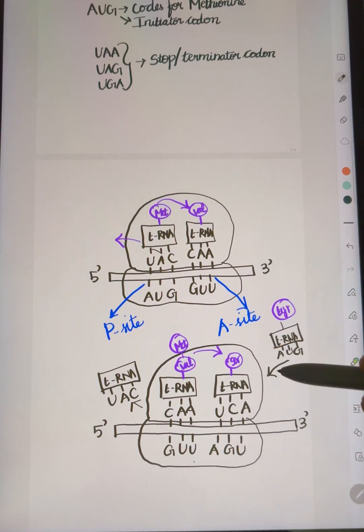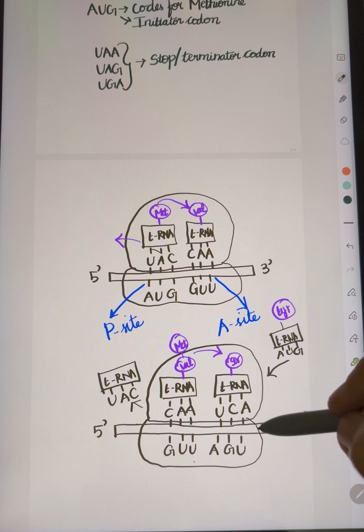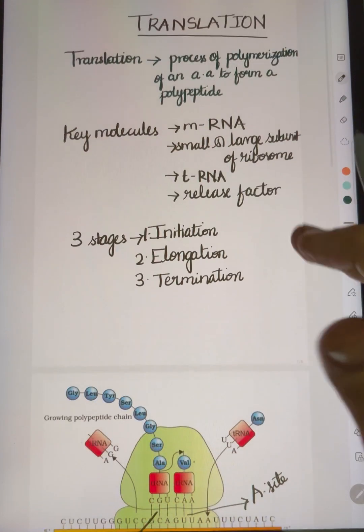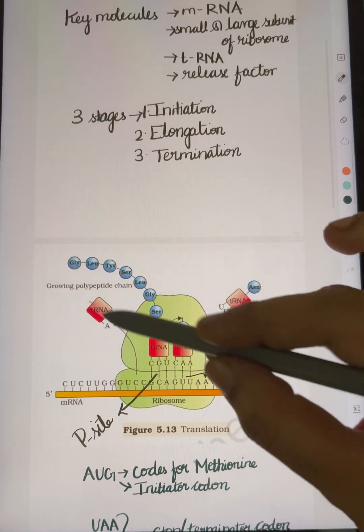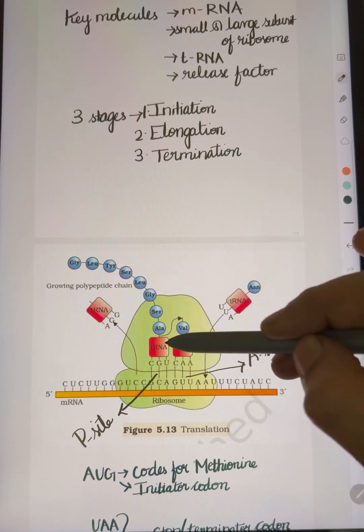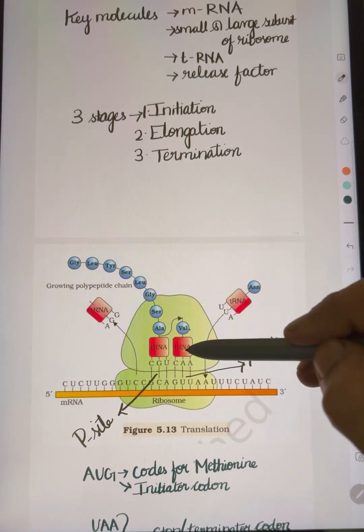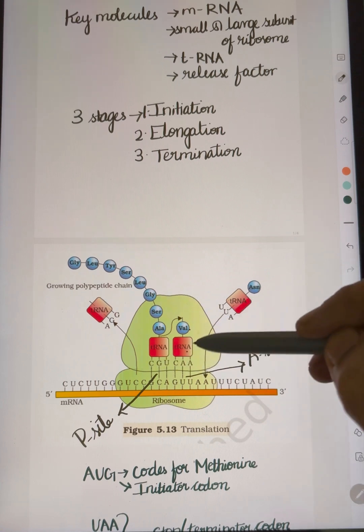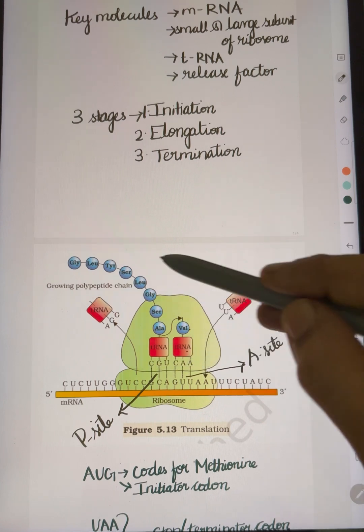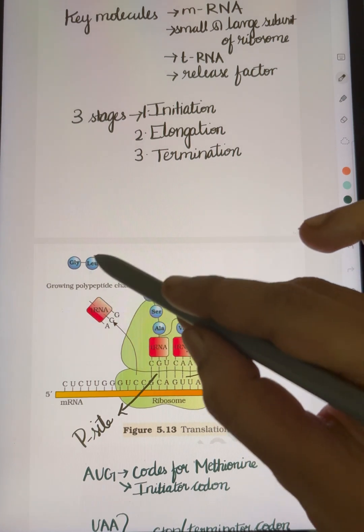The tRNA moves along the mRNA. This is released, so it will be at the P-site. This is the protein synthesis process.